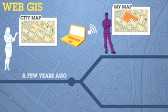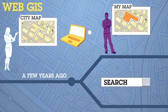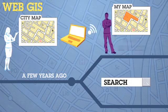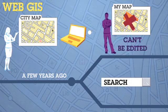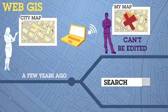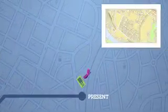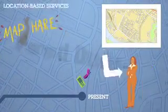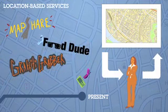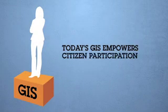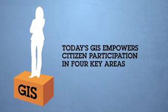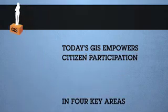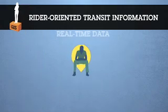Web GIS also introduced interactive features such as querying and searching. However, maps could not be edited by the general public, limiting the potential of citizen participation. Now the third wave of GIS is here, which leverages the two-way dynamic content of web 2.0.